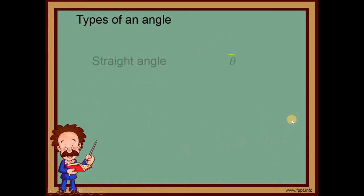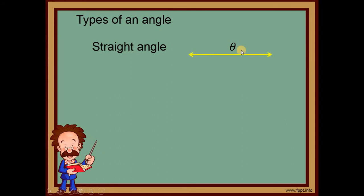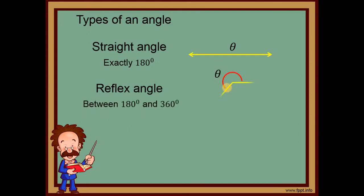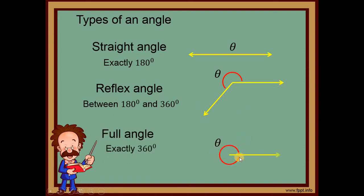Next, number four, we have a straight angle. A straight angle is exactly 180 degrees. Number five, we have what we call a reflex angle — the angle between 180 degrees and 360 degrees, so all angles greater than 180 degrees. And the last one is a full angle — a complete circle, with a measure of exactly 360 degrees.